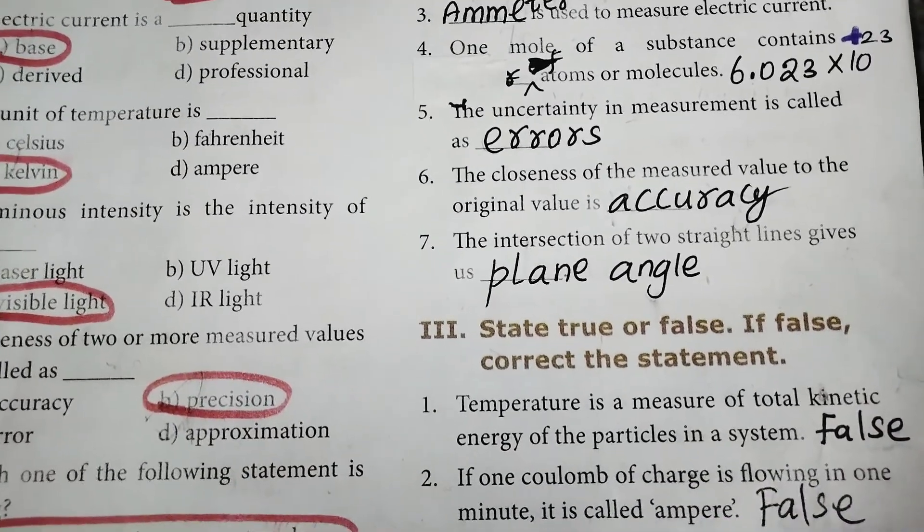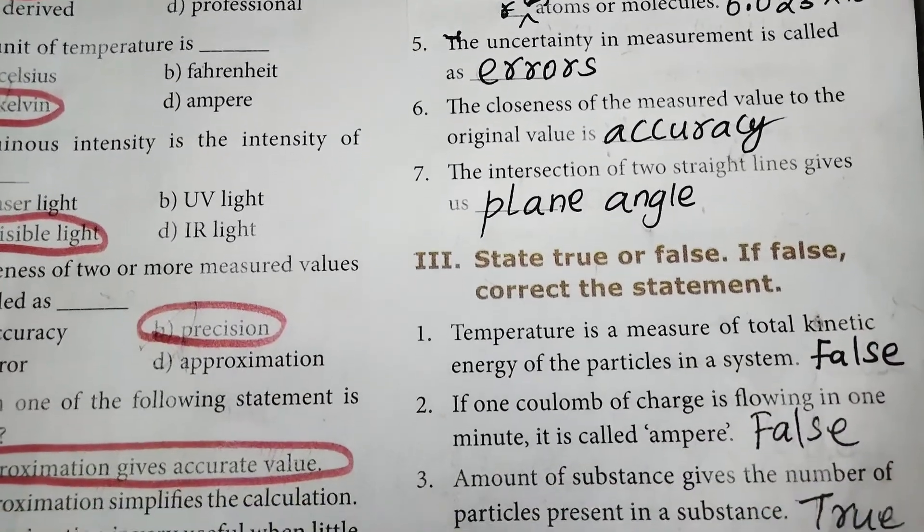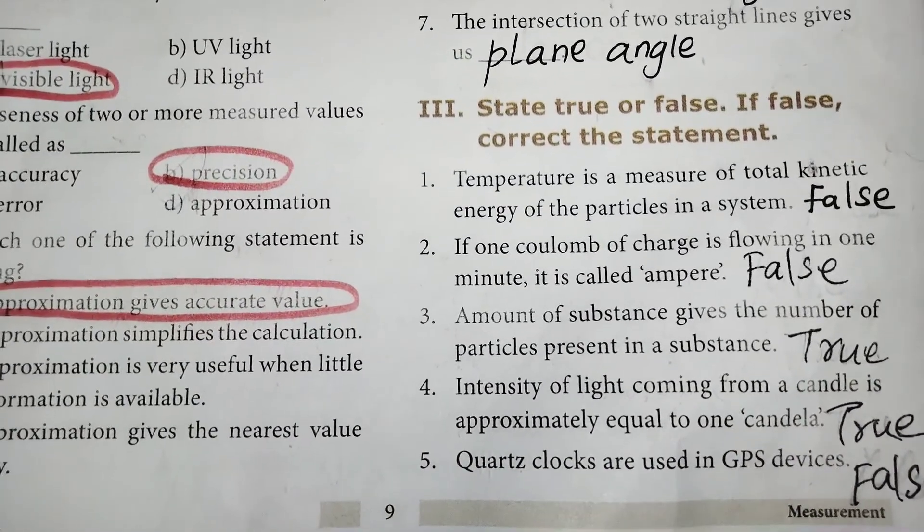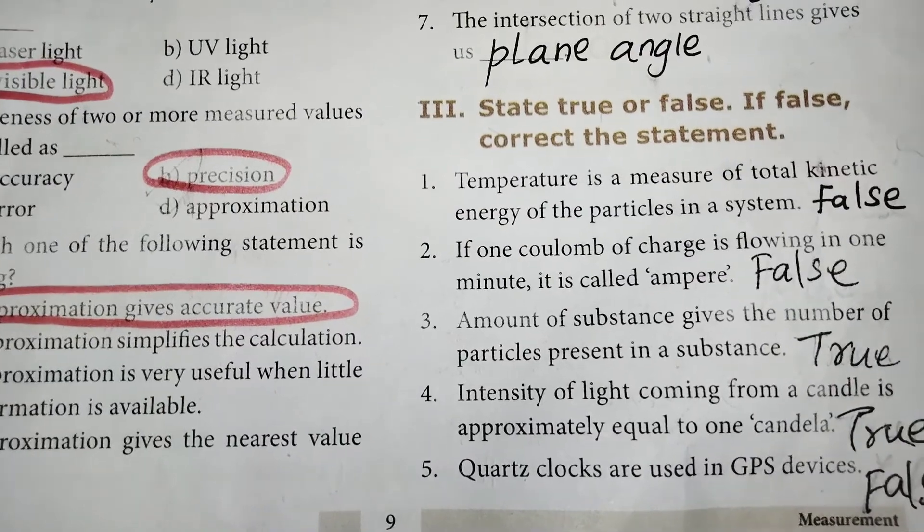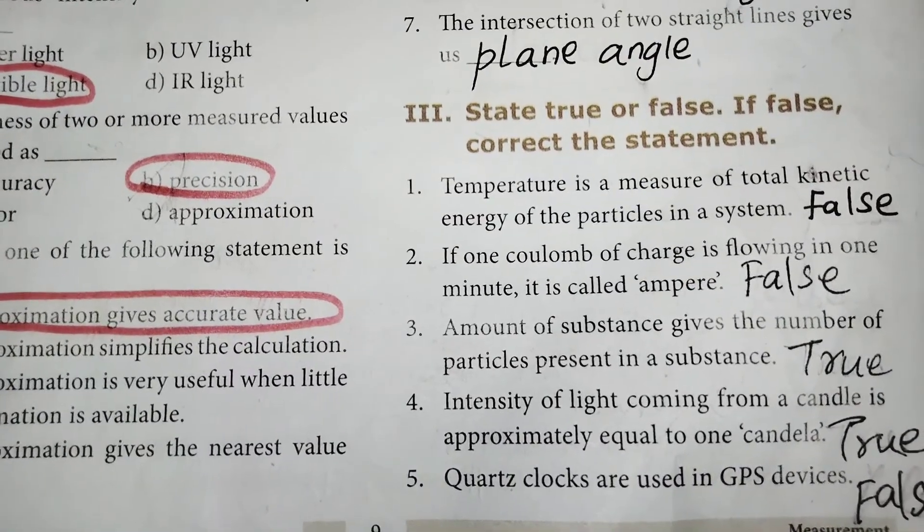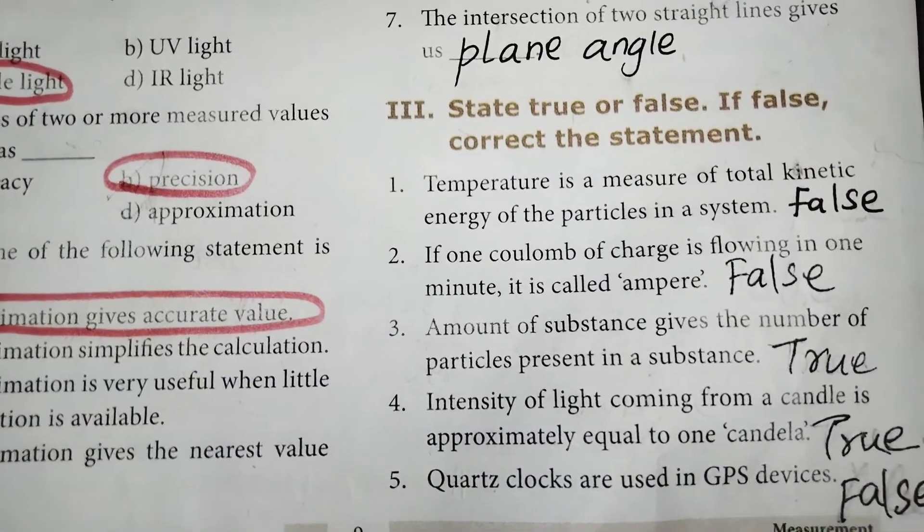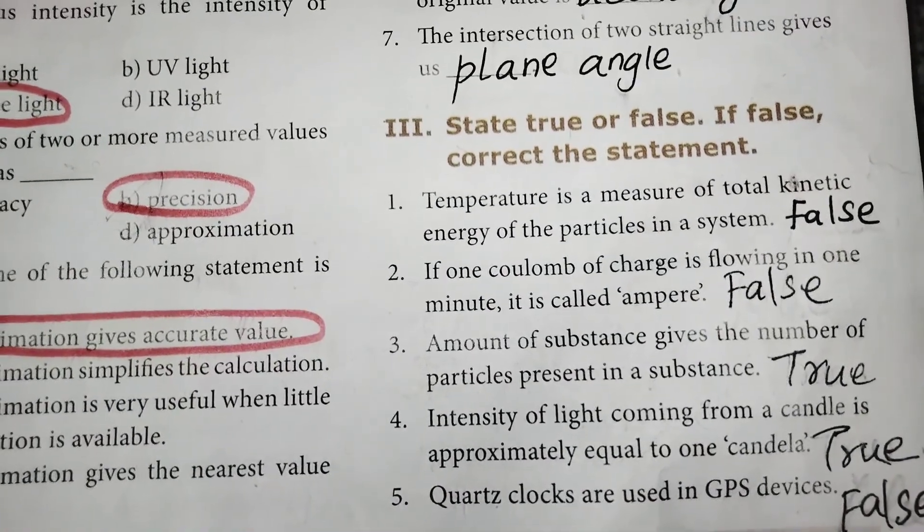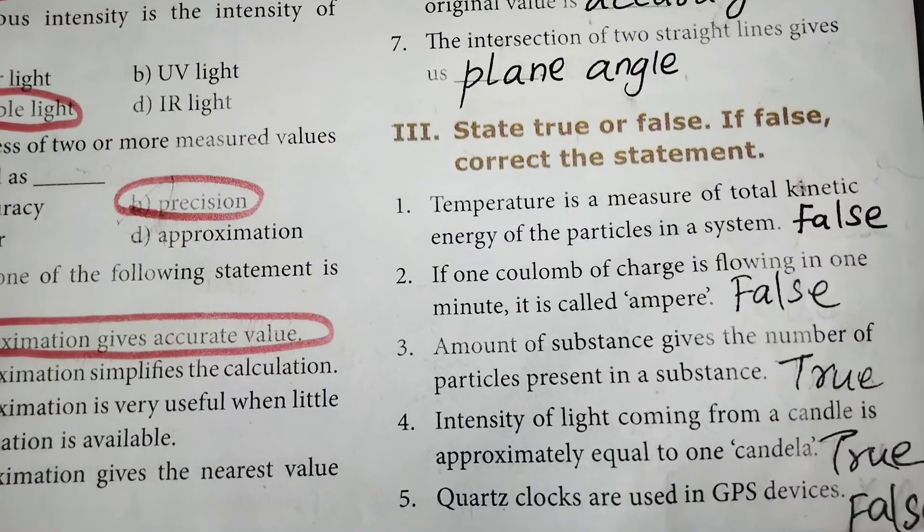Third one, third Roman letter, state true or false. If false, correct the statement. First one, temperature is a measure of total kinetic energy of the particles in a system. False. If one coulomb of charge is flowing in one minute is called ampere. False.